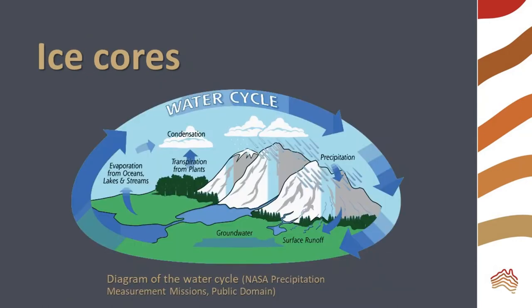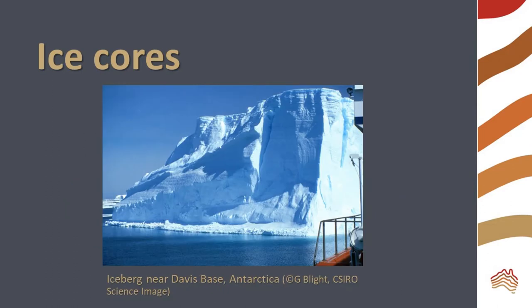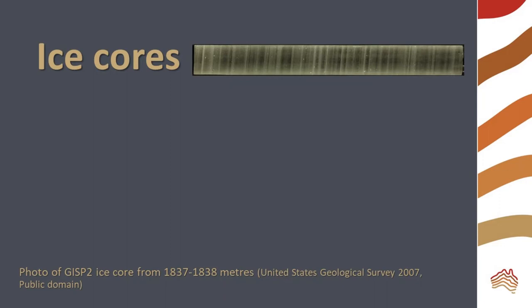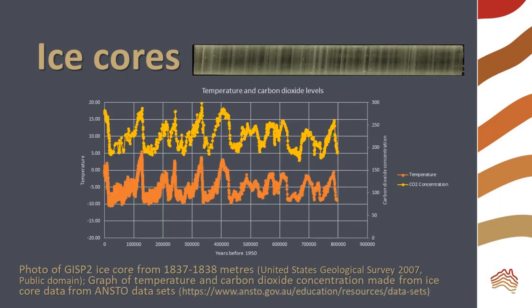As water evaporates, the water and its oxygen leaves the oceans and is deposited on land as precipitation. Some of this precipitation is snow that is compacted over time into ice. We study ice cores to learn more about past climate. The ice cores also trap gases, so we can relate oxygen isotopes in the water to carbon dioxide levels in the air and then to temperature. This is useful over times on the order of hundreds of thousands of years.